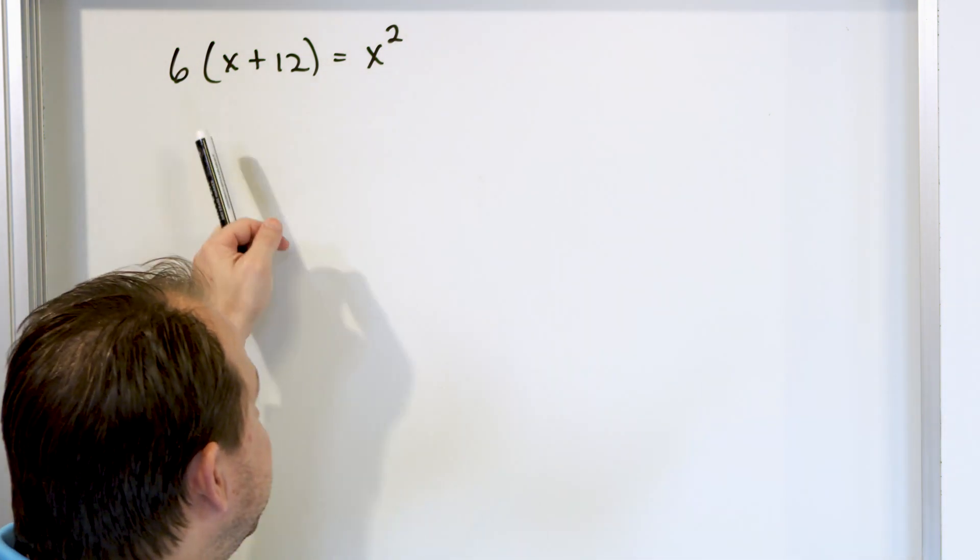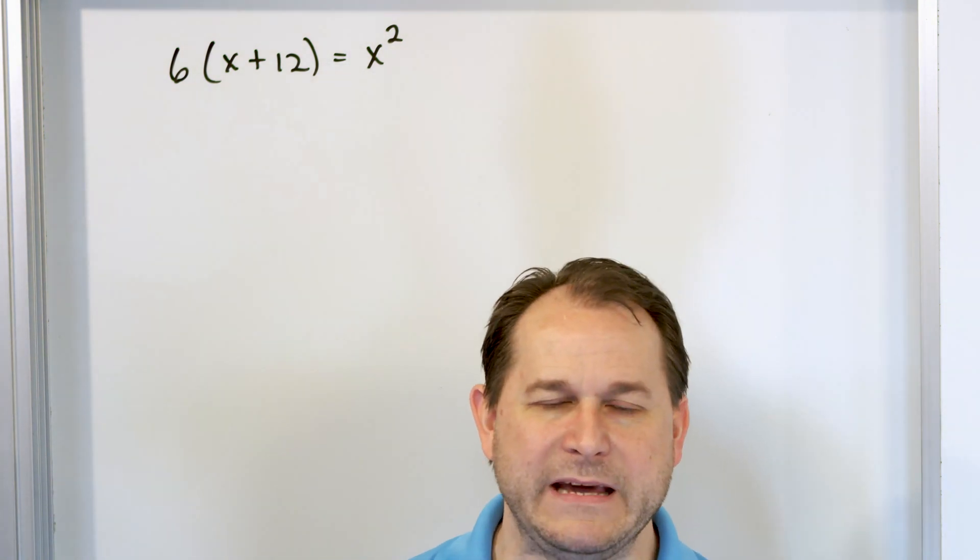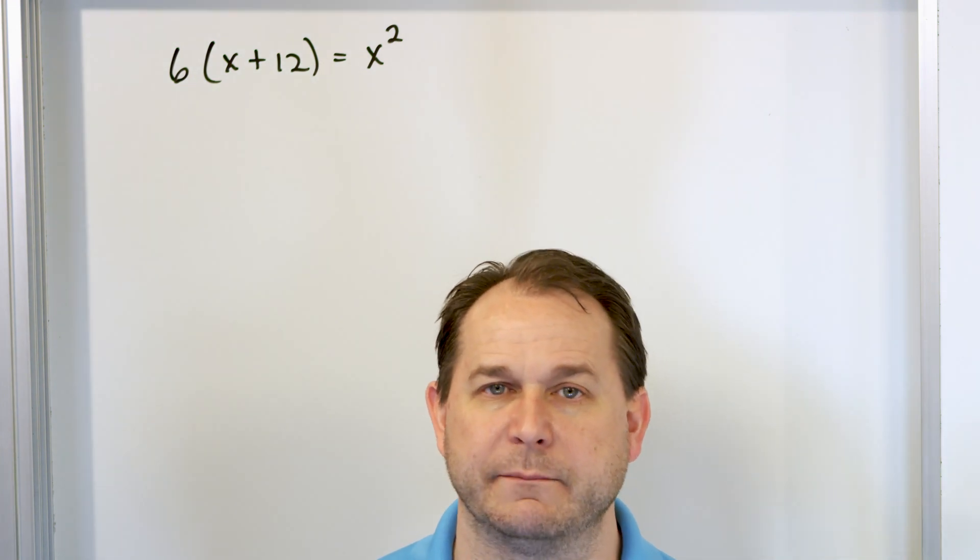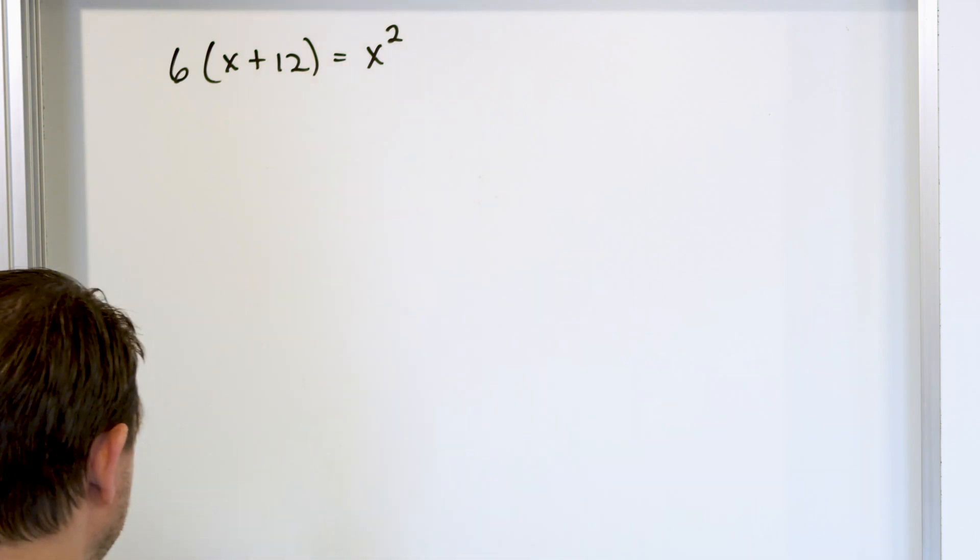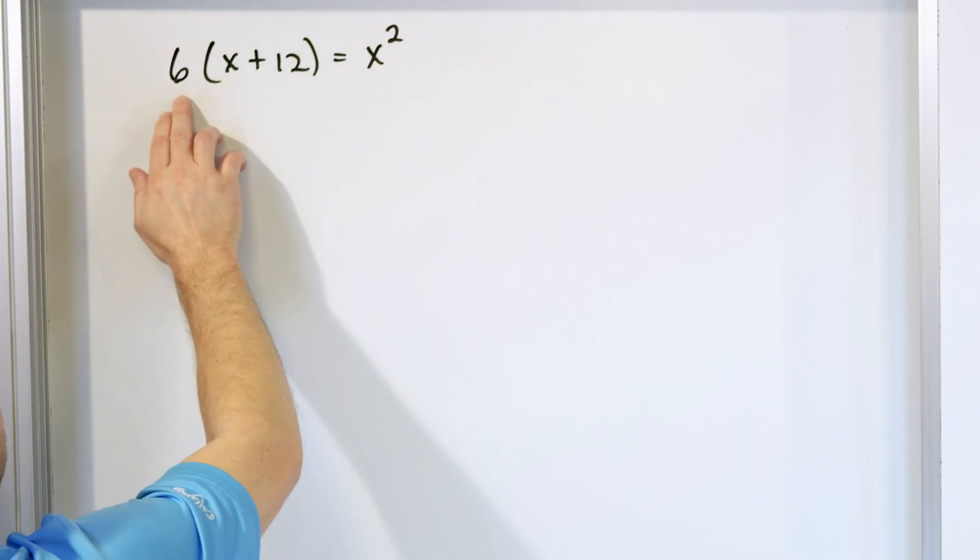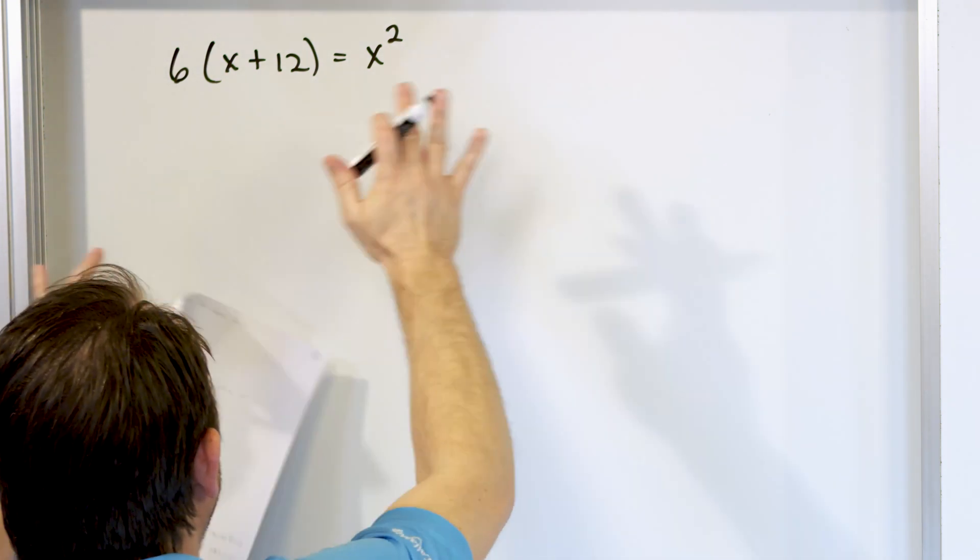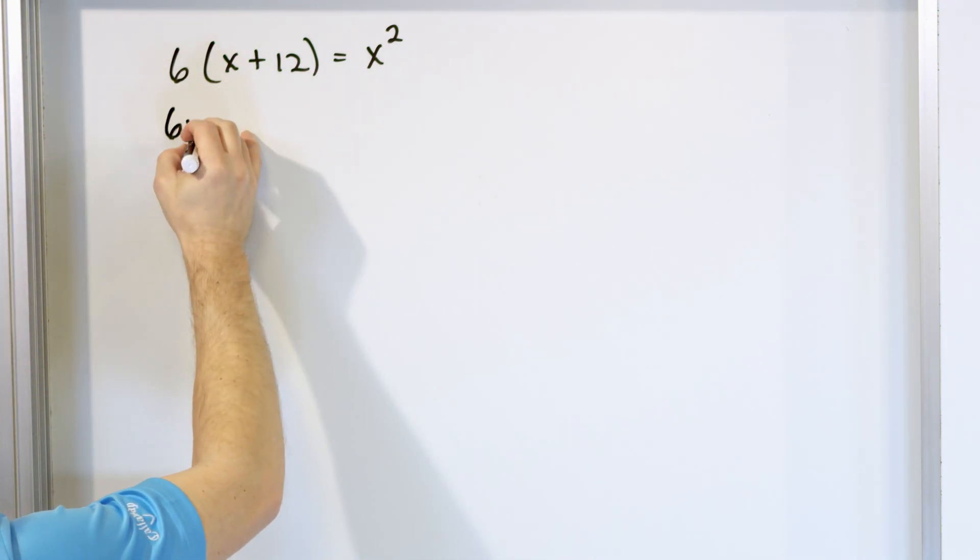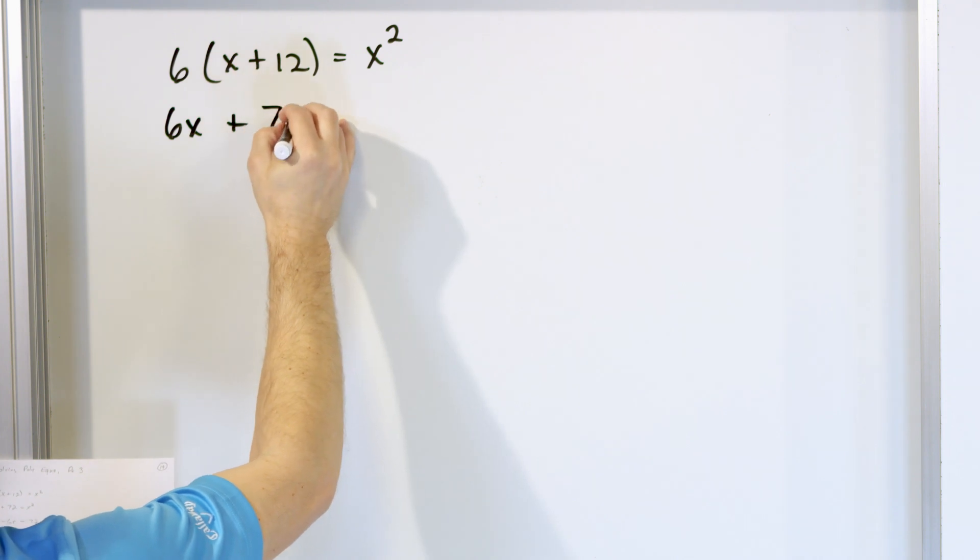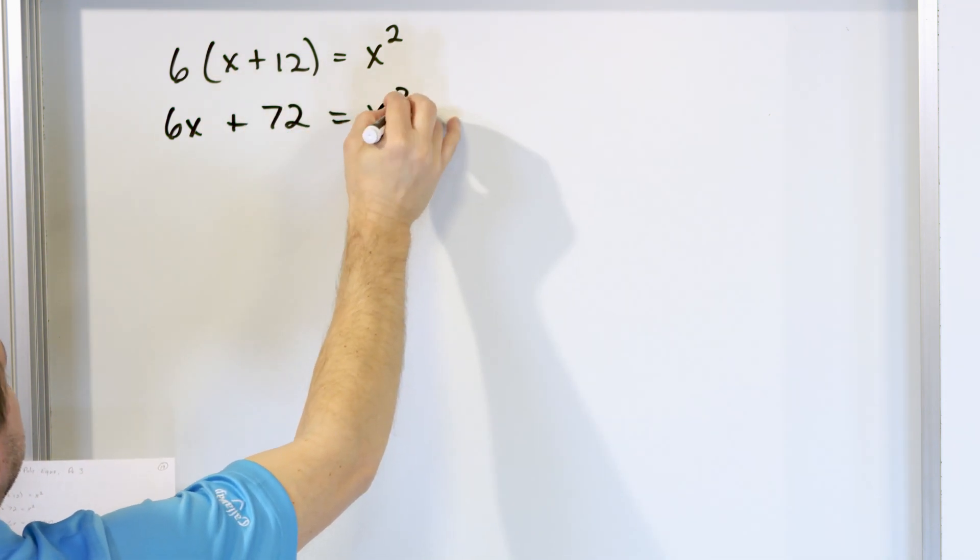Just because there's already a parentheses here does not mean that you have to leave that parentheses in place throughout the entire problem. In fact, the very first thing that we're going to do here is distribute the 6 in and expand and blow this thing up. So 6 times x is going to give me 6x, and 6 times 12 is going to give me 72, and I still have that equal to x squared.